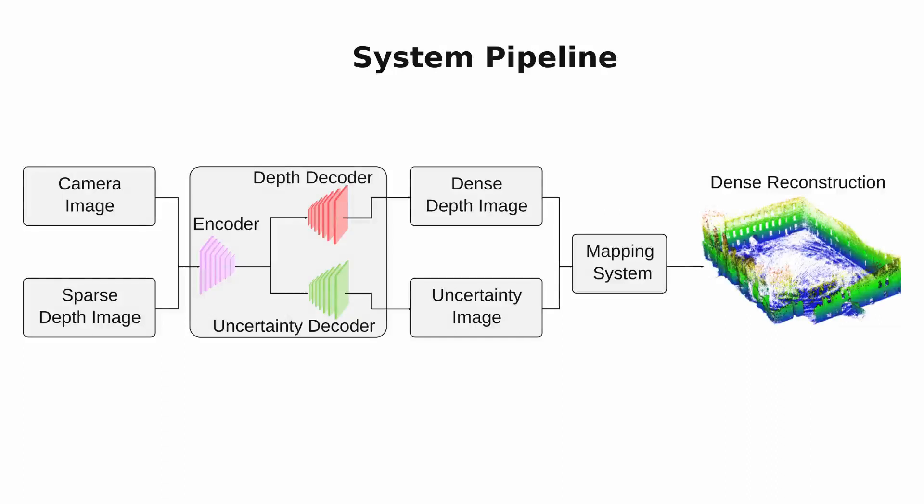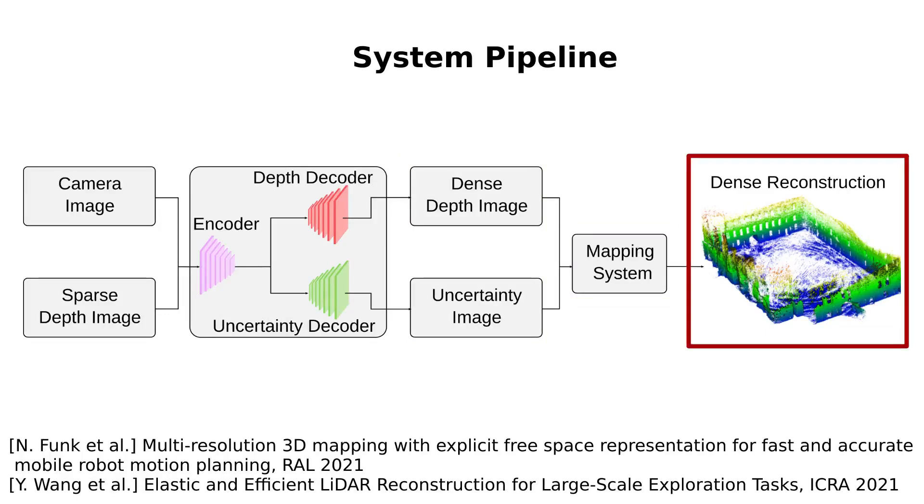The input to our depth completion network is a pair of camera image and a sparse LiDAR depth image. The network consists of a shared encoder and two separate decoders to predict complete depth image and the corresponding depth uncertainty. These outputs are then fed into a volumetric mapping system to obtain 3D occupancy map with explicit free space.